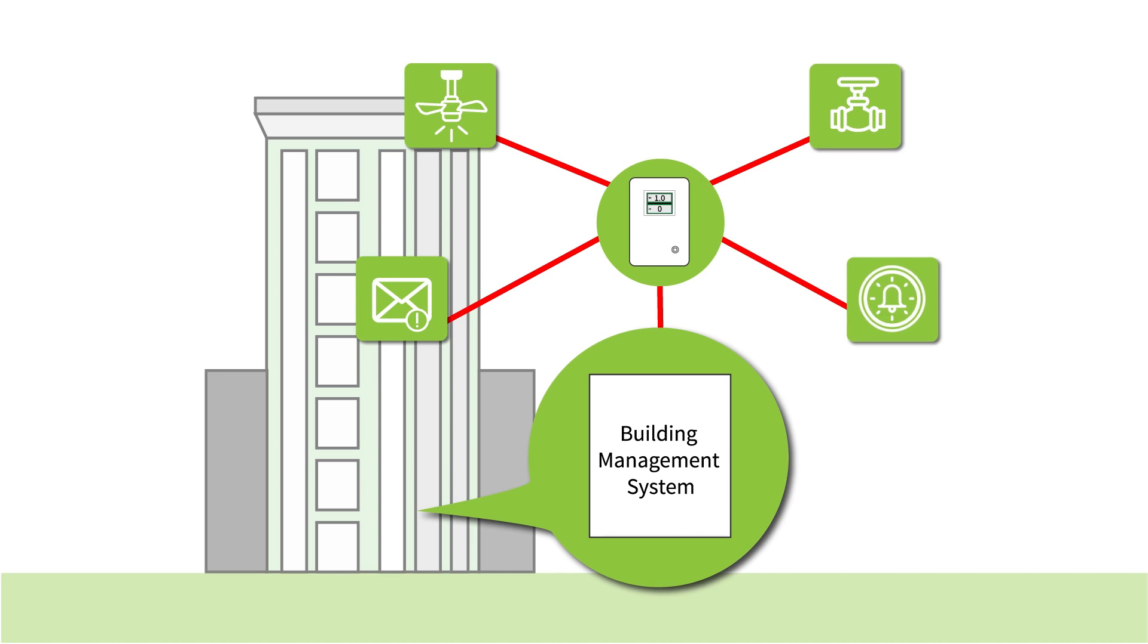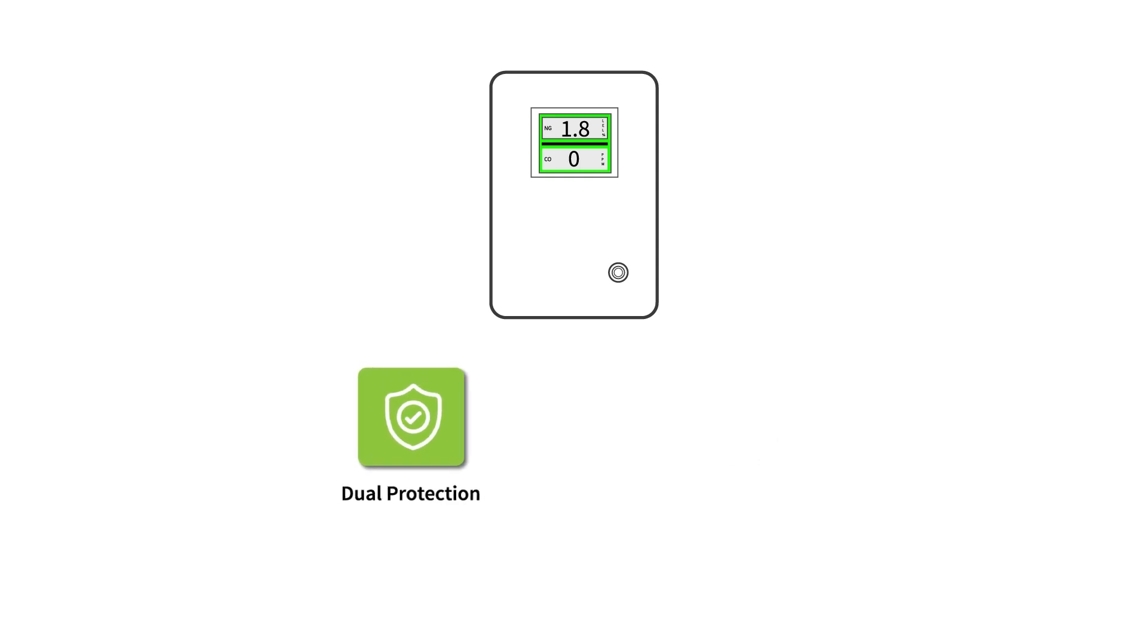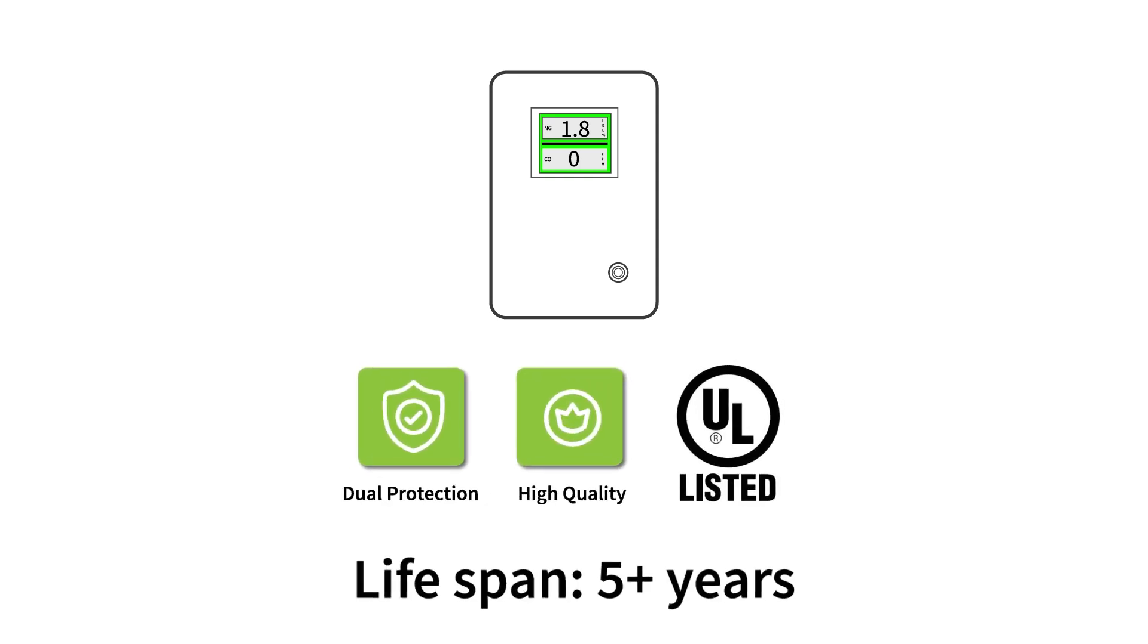Designed for residential and commercial applications, the AGS Mini Merlin offers dual protection with a lifespan of over five years from our commercial grade sensors.